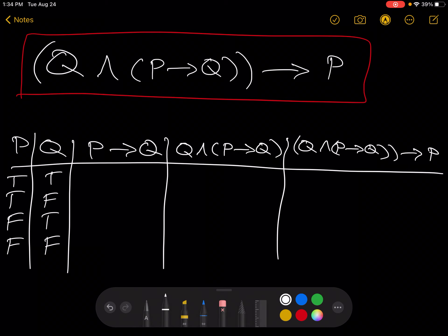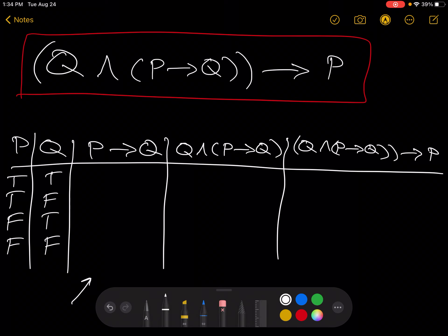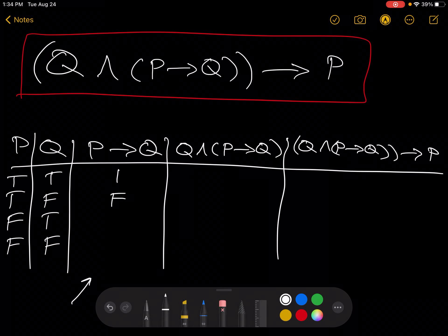So, P implies Q. Looking at this first column here. Remember that this is only false when we have true for P and false for Q. So, we have false here and true everywhere else.